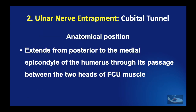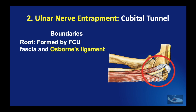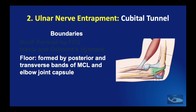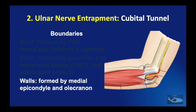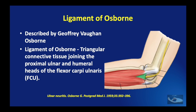The cubital tunnel is an anatomical space extending from posterior to the medial epicondyle of the humerus through its passage between the two heads of flexor carpi ulnaris. The roof is formed by the flexor carpi ulnaris fascia and Osborne's ligament. The floor is formed by the elbow joint capsule, consisting of the posterior and transverse bands of the medial collateral ligament. The side walls are formed by the medial epicondyle and the olecranon. Osborne's ligament is a triangular connective tissue joining the proximal ulnar and humeral heads of flexor carpi ulnaris.